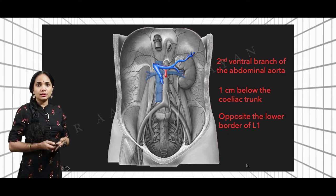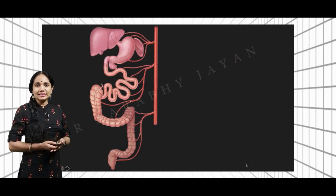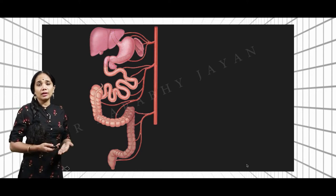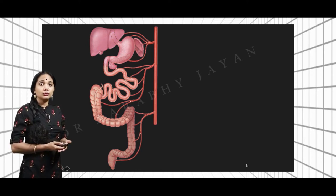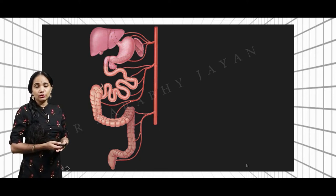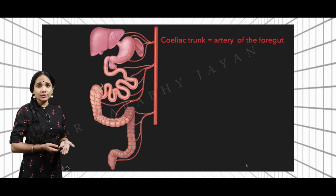Now let's look at the embryological correlations. The intestines can be divided into foregut, midgut, and hindgut. The foregut starts from the lower part of the esophagus all the way to the proximal half of the second part of the duodenum. This is the foregut, and it is supplied by the celiac trunk, which is why the celiac trunk is called the artery of the foregut.